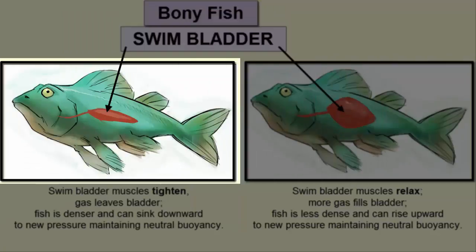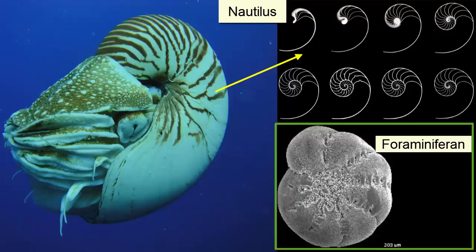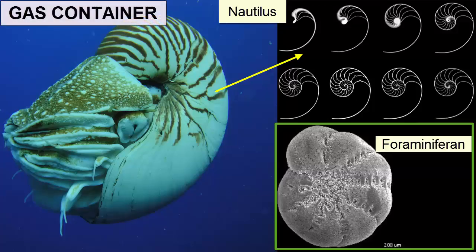If fish with swim bladders descend too quickly, the pressure outside will exceed the pressure in their bladders and the fish will be squeezed inward. Fish with swim bladders simply make sure they rise and fall slowly. Another method of buoyancy is used by animals with hard shells — these shells can contain chambers called gas containers which fill with gas to keep the animal afloat, and these organisms can rise and fall quickly through the oceans with no harmful effects.